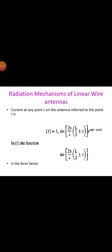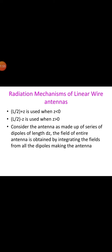The expression (L/2 + z) is used when z is less than 0, and (L/2 - z) is used when z is greater than 0. By regarding the antenna as made up of a series of infinitesimal dipoles of length dz, the field of the entire antenna may then be obtained by integrating the fields from all the dipoles making up the antenna.